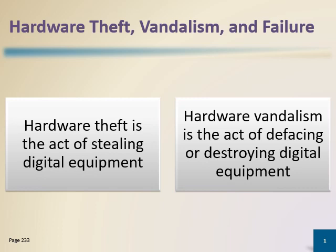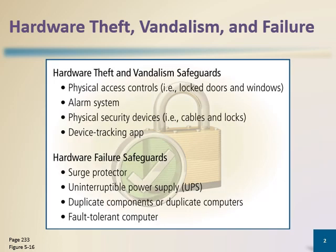You can protect your hardware by adding physical access controls — locked doors, locked windows — especially where computers are kept, such as in a company. You can have alarm systems that trigger when a device is being taken. Physical security devices like cables and locks prevent anyone from opening your devices. You can also add a device tracking app to locate stolen hardware.